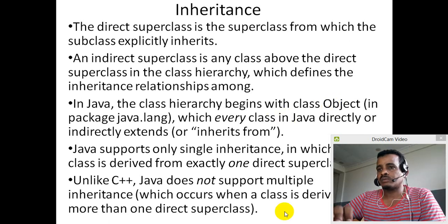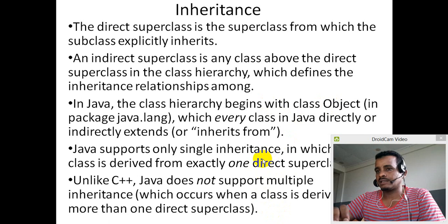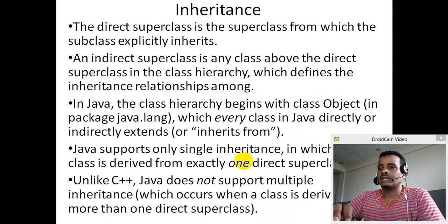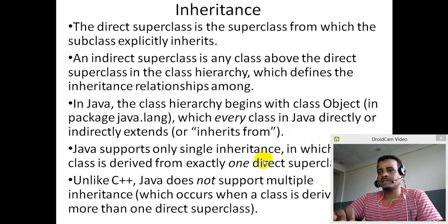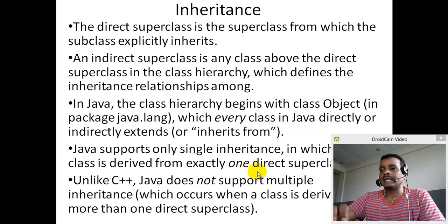Java supports single inheritance only, meaning a class extends one other class. For example, a calculator class extends Object. In contrast, C++ supports multiple inheritance.